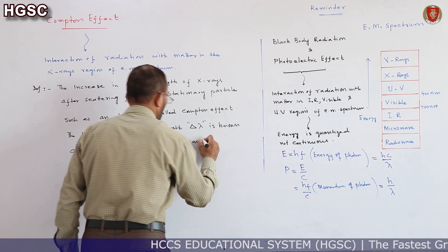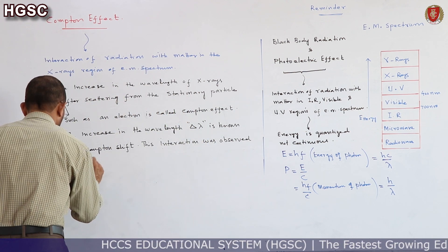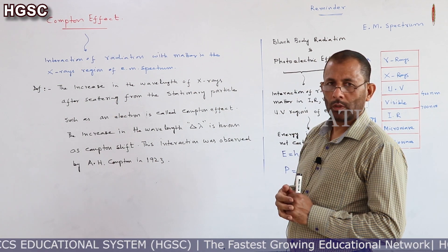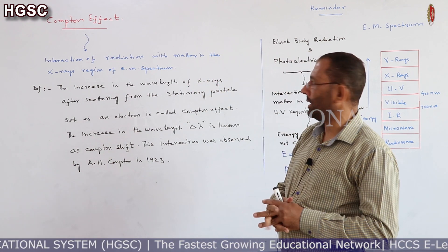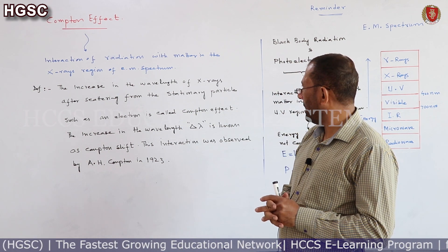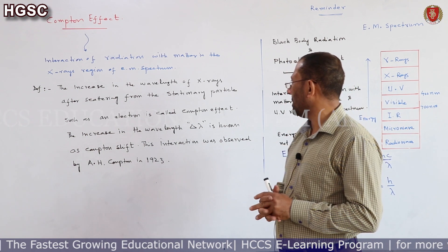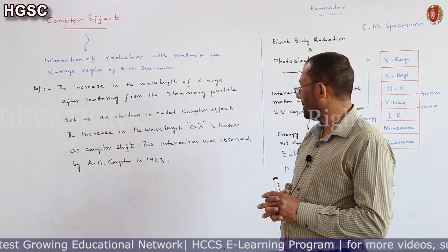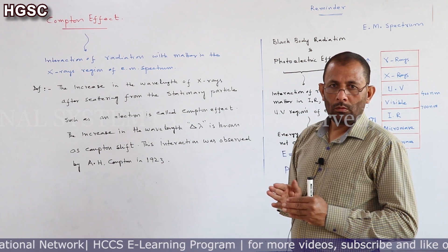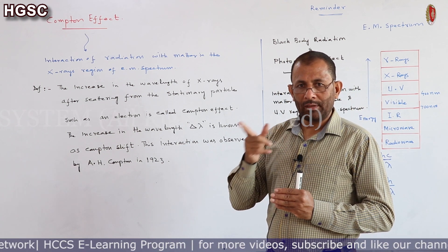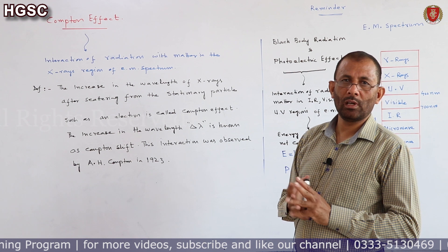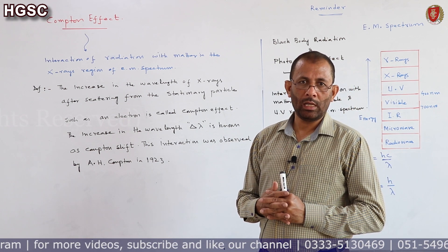This interaction was observed by A.H. Compton in 1923. To repeat: Compton Effect is the interaction of radiation with matter in the X-ray region. Its definition — the increase in wavelength of X-rays after scattering from a stationary particle such as an electron — is called Compton Effect. The increase in wavelength Δλ, obtained by subtracting the wavelength of incident X-rays from the wavelength of scattered X-rays, is known as Compton shift.